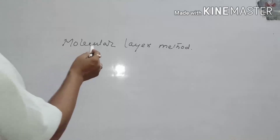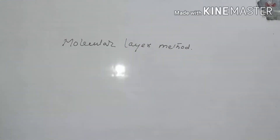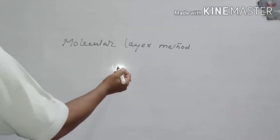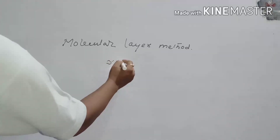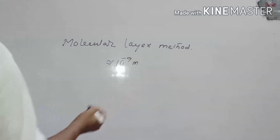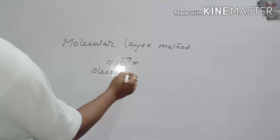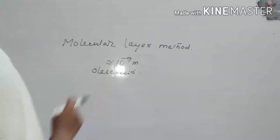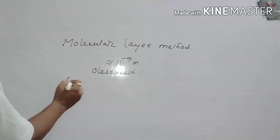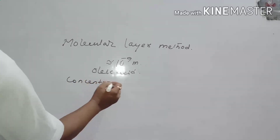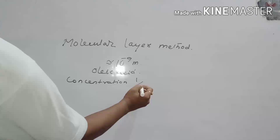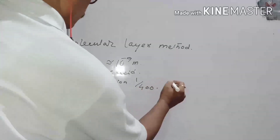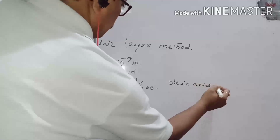We now discuss the molecular layer method. It is a practical method of finding the size of molecules of a liquid having a comparatively larger size, nearly equal to 10⁻⁹ meters — for example, oleic acid. First, we prepare a solution of concentration 1/400 of oleic acid in alcohol.